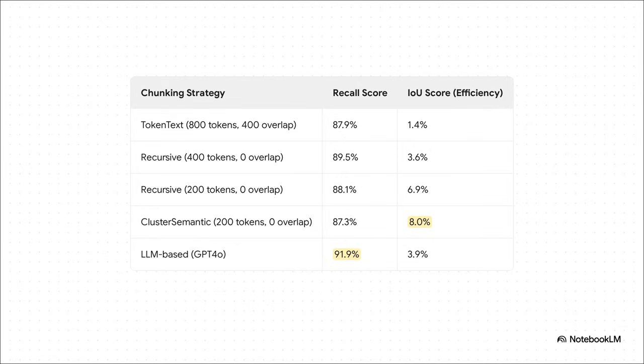And this isn't just a thought exercise. Research shows just how wildly performance can change based on your choices. Looking at this table: the LLM-based chunker gets the highest recall score — it's the best at finding all the relevant information. But the semantic chunker wins on IOU score, which measures efficiency — it retrieves the least amount of irrelevant content. And the simple token text method has an efficiency of just 1.4%. So yeah, your choices really, really matter.